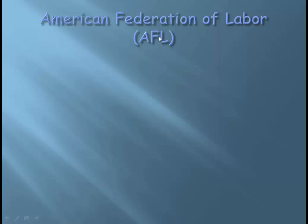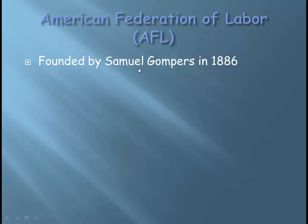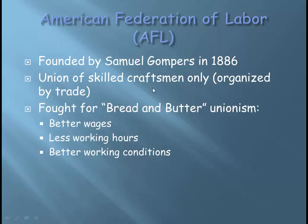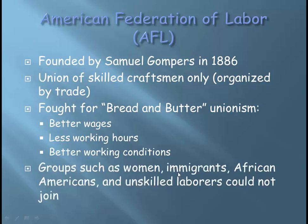The American Federation of Labor — the AFL, not a football conference — is the one you should really focus on. Founded by Samuel Gompers in 1886, it united only skilled craftsmen. It did not accept unskilled laborers, did not accept women — it was white men, skilled only. It's known as a bread-and-butter union. Bread-and-butter issues are better wages, fewer work hours, and better working conditions. Groups such as women, immigrants, African Americans, and unskilled laborers certainly could not join. It was called a crafts union.